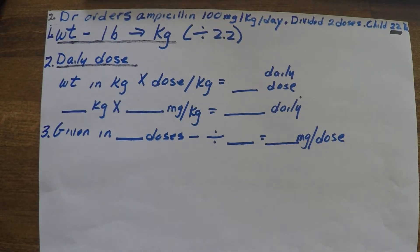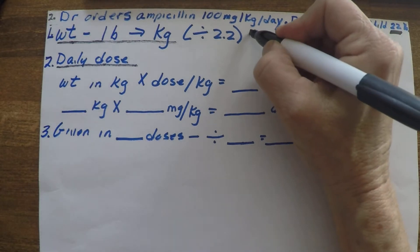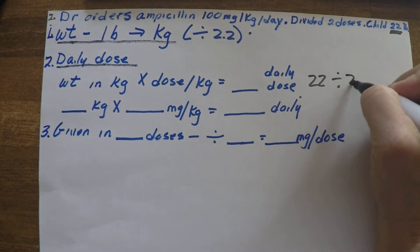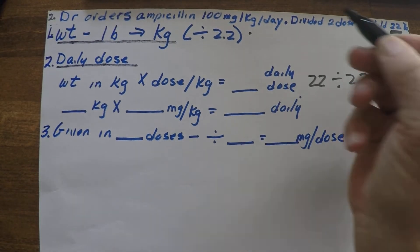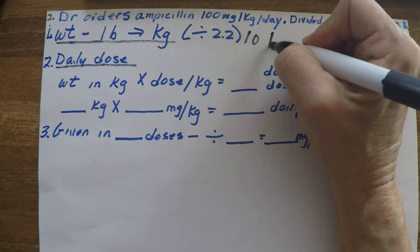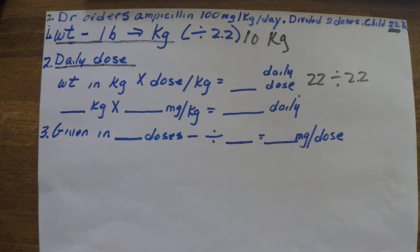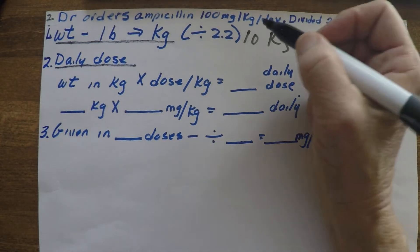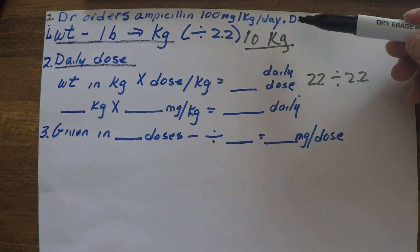So the first thing that we want to do is change our weight from pounds to kilograms. So we'll go 22 divided by 2.2, and that's going to be 10 pounds—whoops, 10 kilograms, I'm sorry, 10 kilograms. So 22 pounds divided by 2.2 is going to give us a total weight of 10 kilograms.